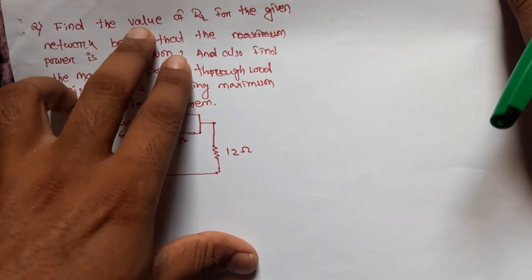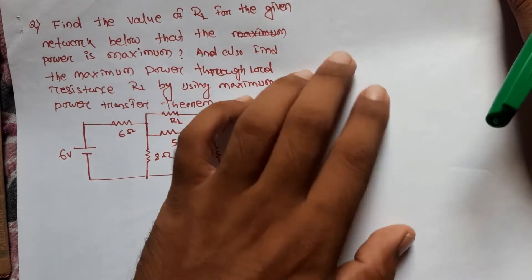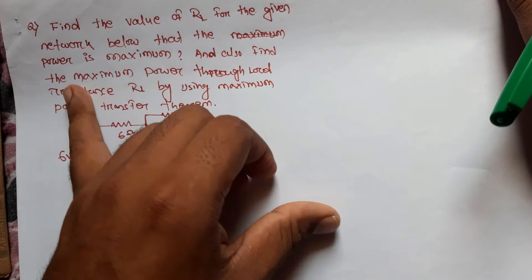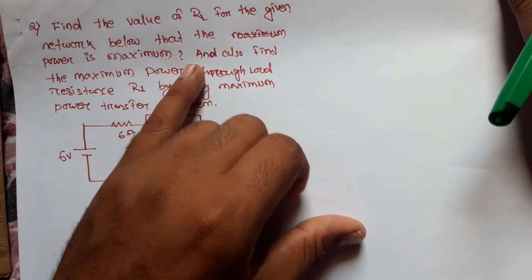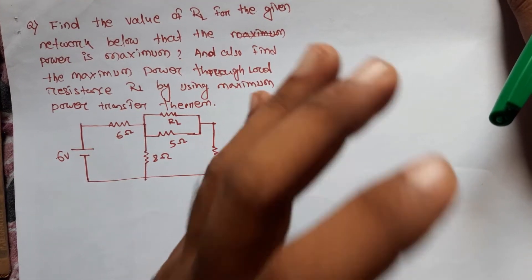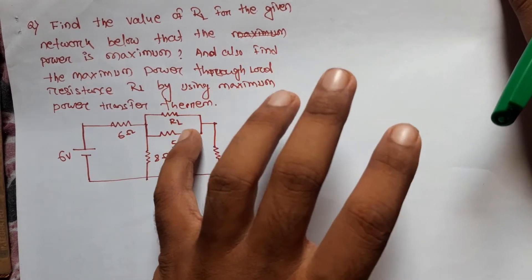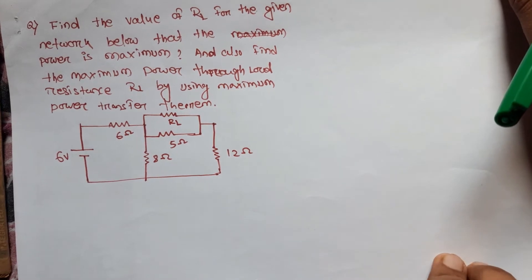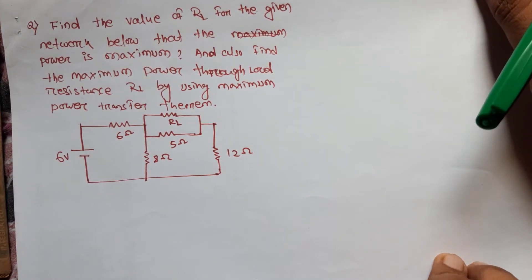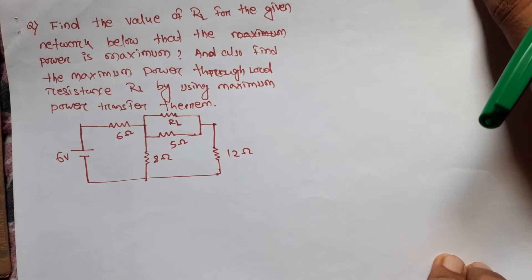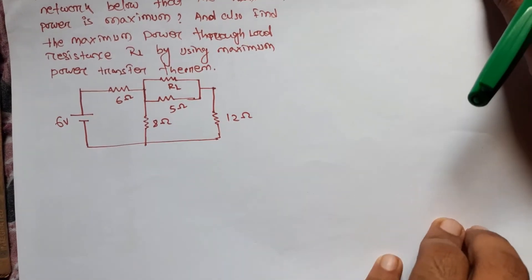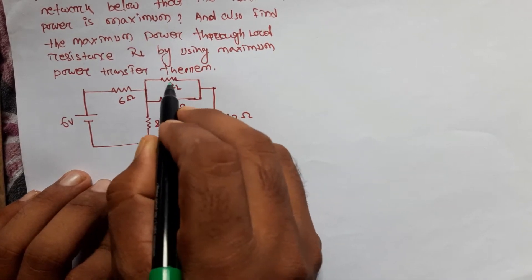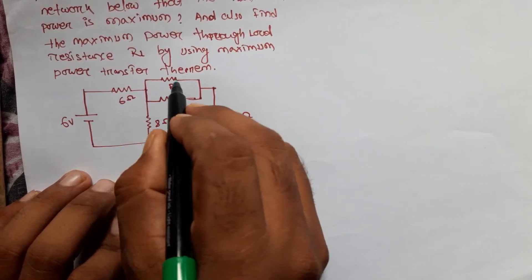The question is: given a network, find the value of RL for which the power delivered is maximum. Also find the maximum power through RL using the maximum power transfer theorem.